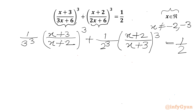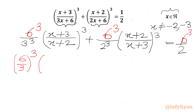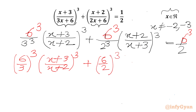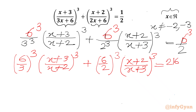Now I will multiply our equation by 6 cubed on both sides. So I can write 6 over 3 whole cube times x plus 3 over x plus 2 whole cube, plus 6 over 2 whole cube times x plus 2 over x plus 3 whole cube. And 6 cubed is 216 divided by 2, so the right-hand side will be 108.